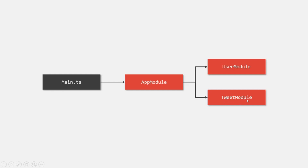We can also connect two different user-defined modules. For example, let's say we have a user module and a tweet module. Every tweet will be associated with a user — a user will write a tweet. So we might want to use the user module inside the tweet module whenever a new tweet is displayed, for example to show the user who made that tweet. So we can also connect two user-defined modules, and we will learn how to do that in our coming lectures.